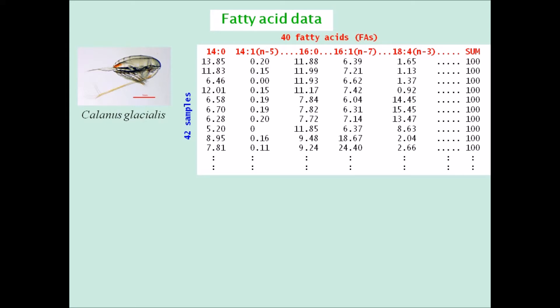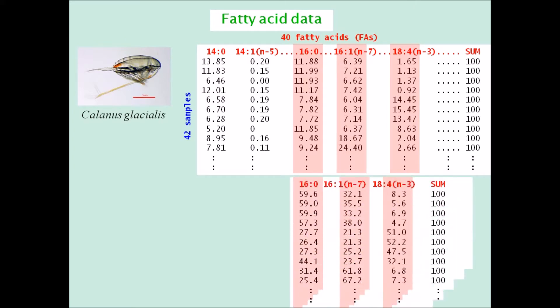The problem with compositional data is that the data set could have been bigger if more fatty acids had been included, or smaller if some were eliminated. To take an extreme example, suppose three of the fatty acids are retained and the others omitted. After renormalizing the data to sum to 100%, all the values in the table have changed.